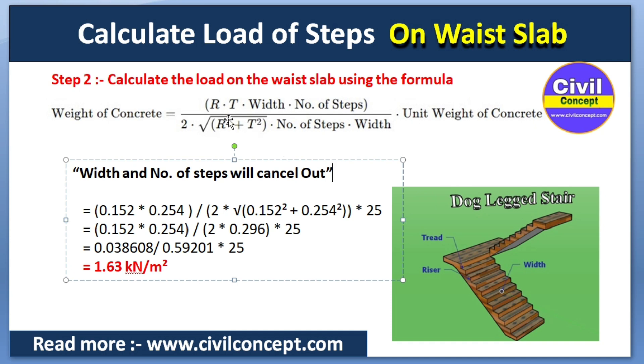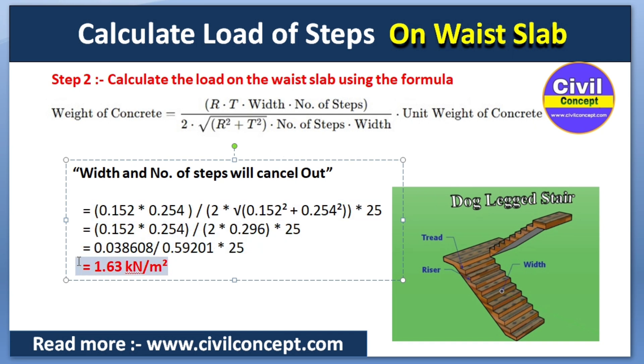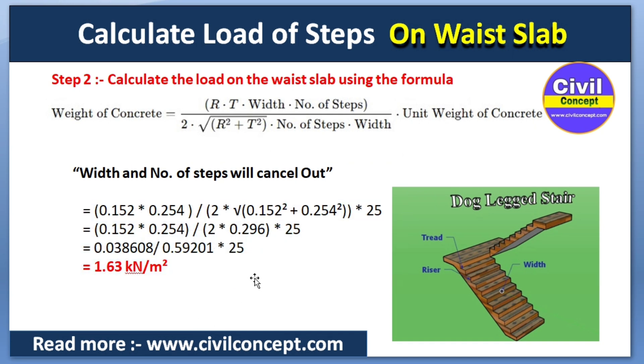After substituting all values into the simplified formula, we get a load of 1.63 kilonewton per meter square.